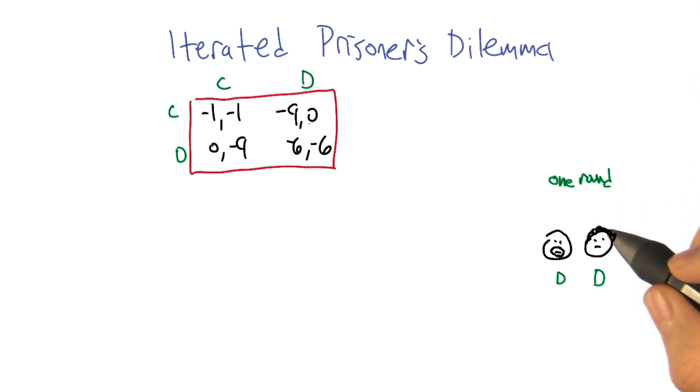They always defect, right. So in particular, we said, what happens if they have multiple rounds in which to interact? And so here they are, here are the two of them. If they got one round to live, we did an analysis and we indicated that there's really nothing they can do other than defect against each other. It's just irrational to do anything else.